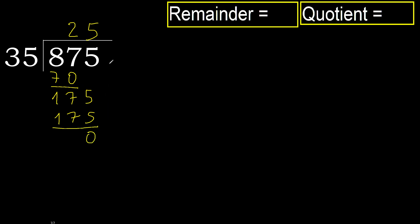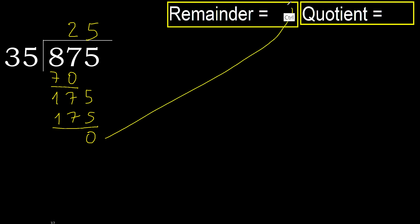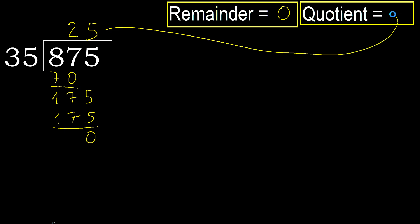Subtract. Next. That is not a number, therefore finish it. 875 divided by 35 is 25.